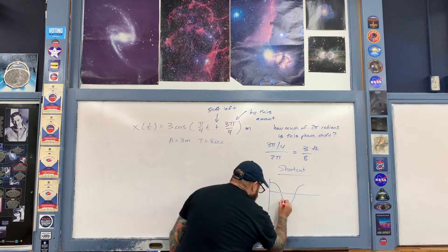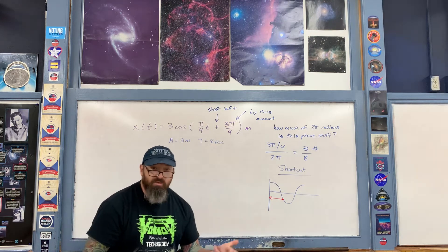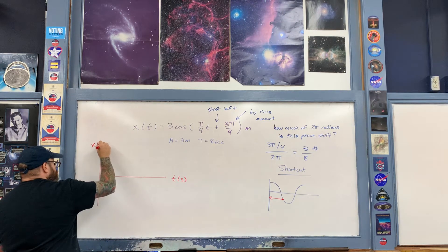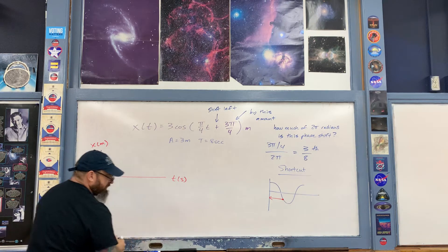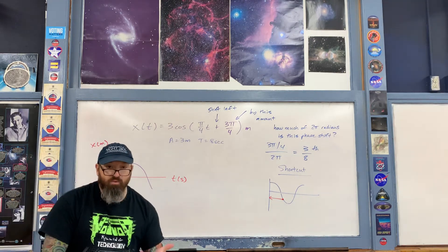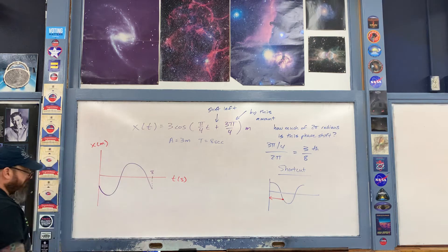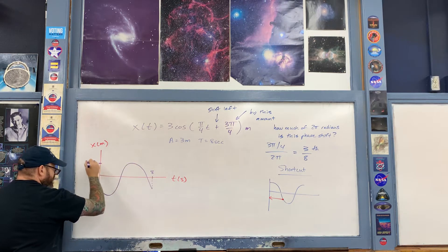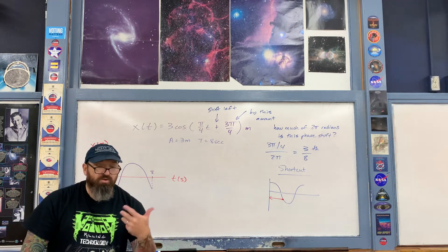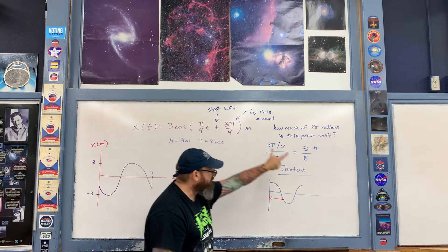I take the function and shift it to the left until the 3/8 point lies along the vertical axis — that's where I start my graph. Drawing by hand: time in seconds, position in meters. I start at the vertical axis and graph one full oscillation. The period is 8 seconds, the amplitude reaches positive 3 meters and negative 3 meters. Basically, figure out how much of 2π the phase angle is, and go from there.